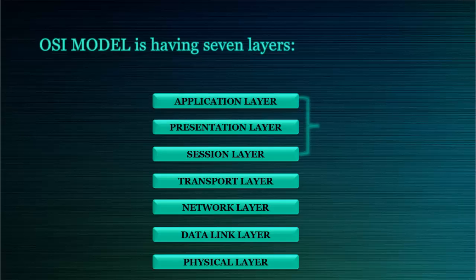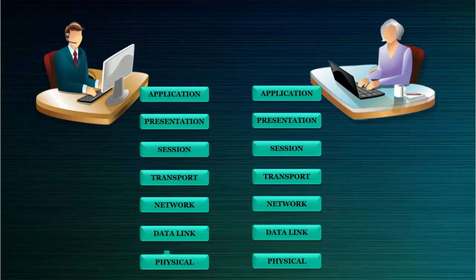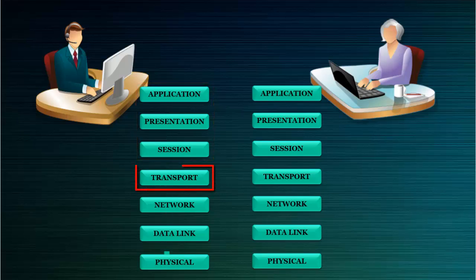The top three layers are also called the upper layer of OSI Model. Suppose in an office we have two users and user 1 is sending data to user 2. This data will travel from the upper layer — that is application, presentation, and session layer — down to the transport layer.